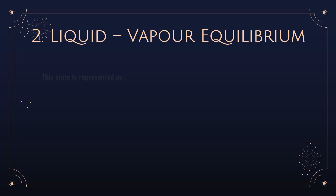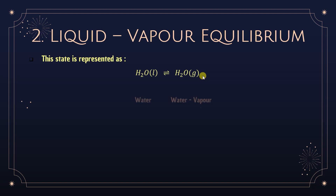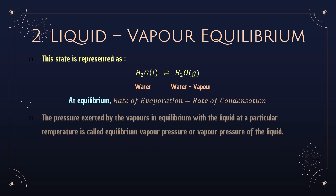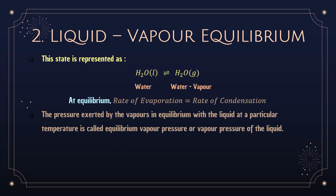Liquid-vapor equilibrium is represented as H₂O(l) ⇌ H₂O(g) — water and water vapor in equilibrium. At equilibrium, the rate of evaporation equals the rate of condensation. The pressure exerted by the vapors in equilibrium with the liquid at a particular temperature is called equilibrium vapor pressure, or the vapor pressure of the liquid. Vapor pressure of the liquid is the pressure applied by the vapor molecules on the liquid surface at equilibrium.